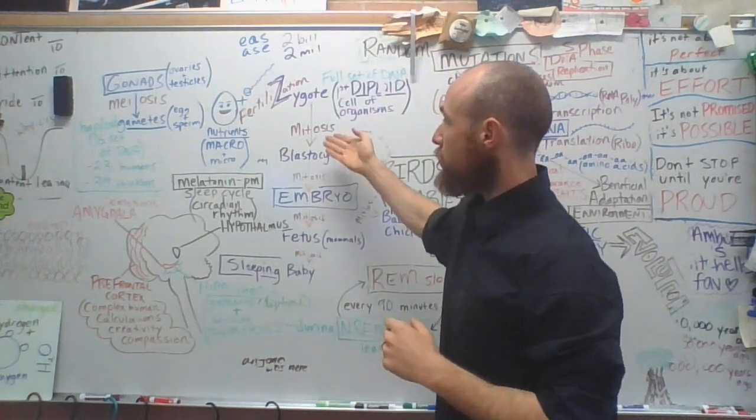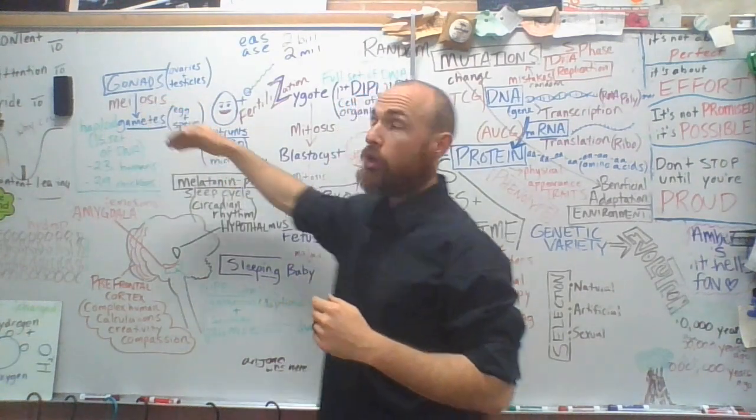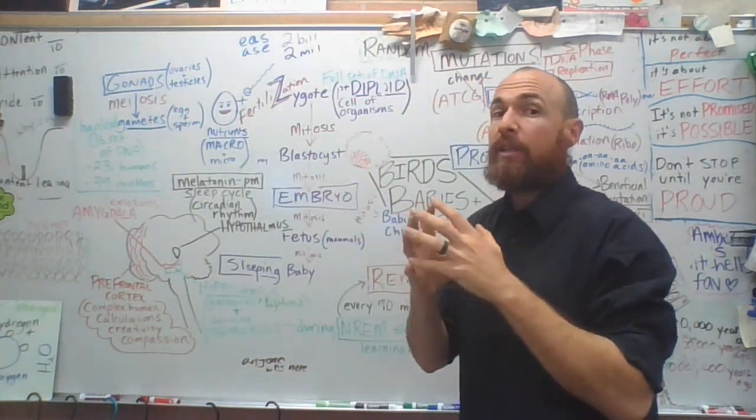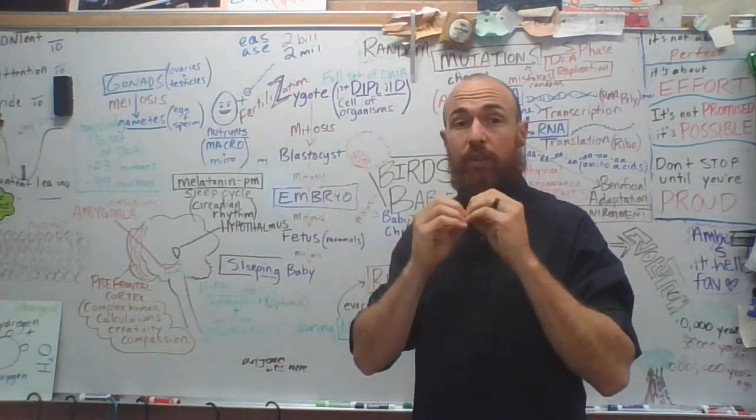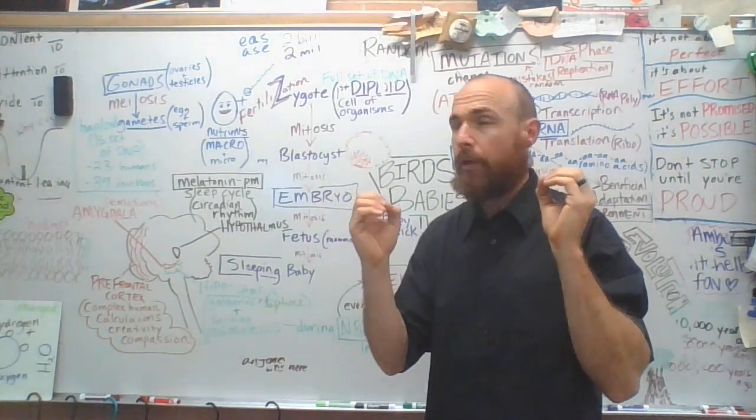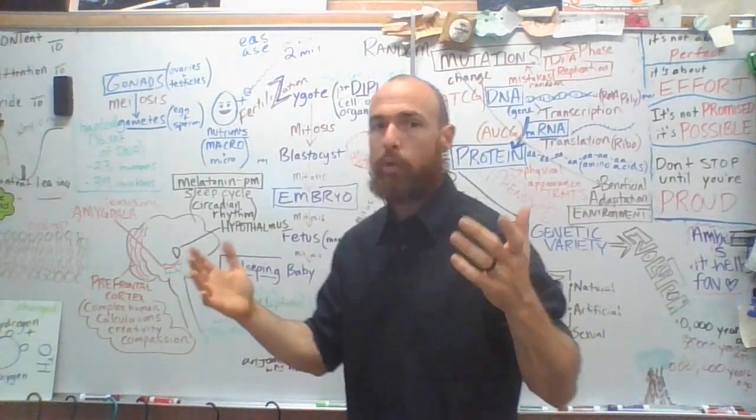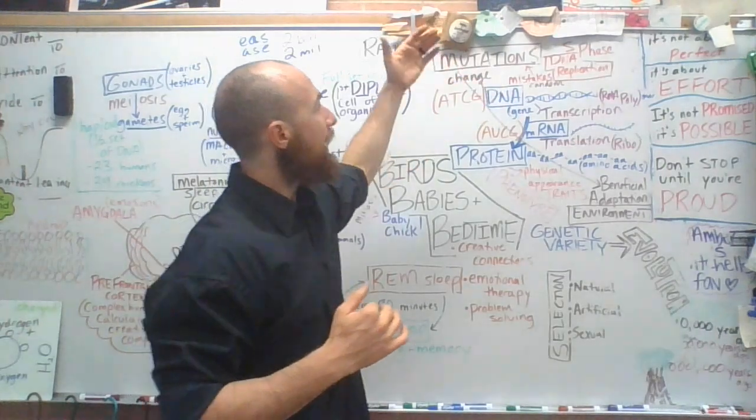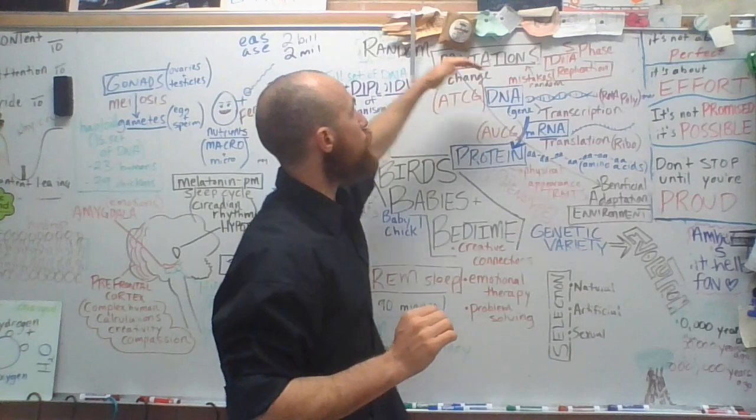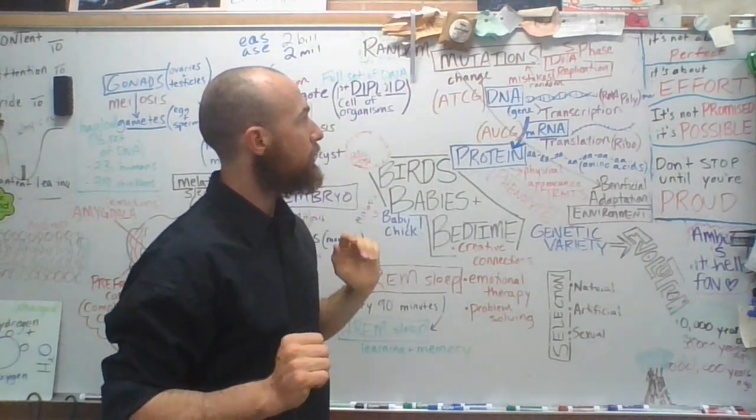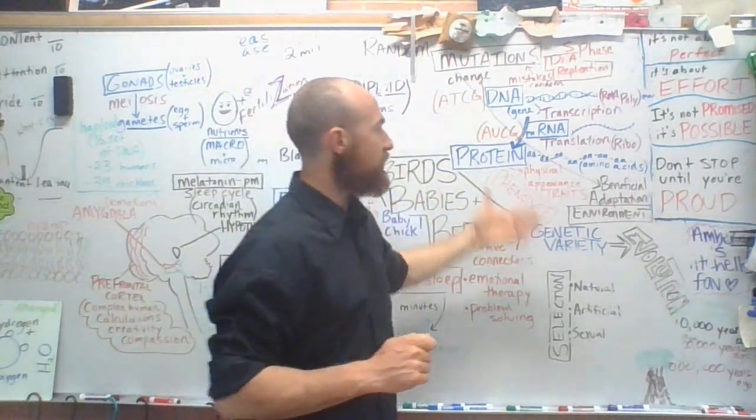S phase happens before mitosis. Every time you do mitosis, every time you do meiosis, you have to do S phase DNA replication beforehand. Because if you're making a new cell, both of the cells need DNA. If you're doing mitosis, both of the cells need full set of DNA, diploid. If you're doing meiosis, those cells need a half a set of DNA. So we're still making more DNA. We're always going to replicate our DNA. And so if DNA replication is not quite perfect, then we get these random mutations, changes in the letters of DNA sequence, which randomly changes your proteins, which gives us different physical appearances.